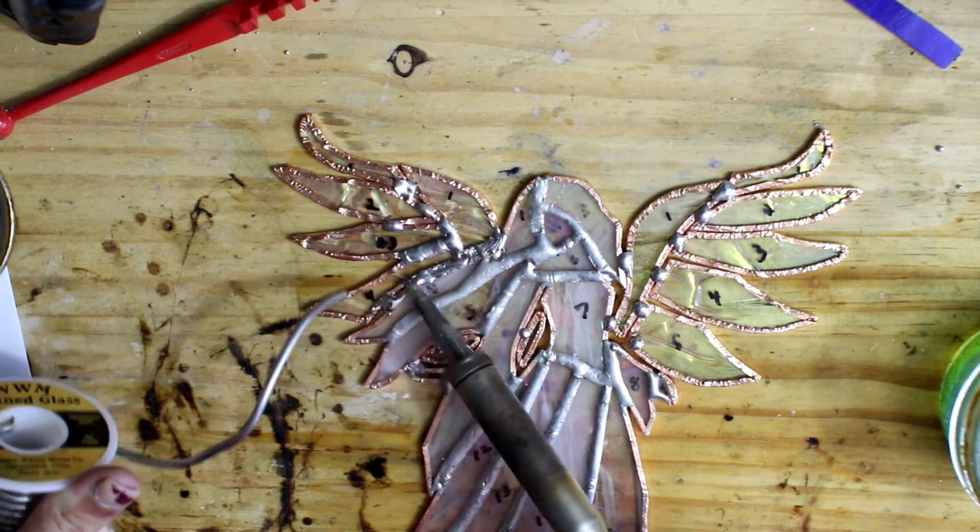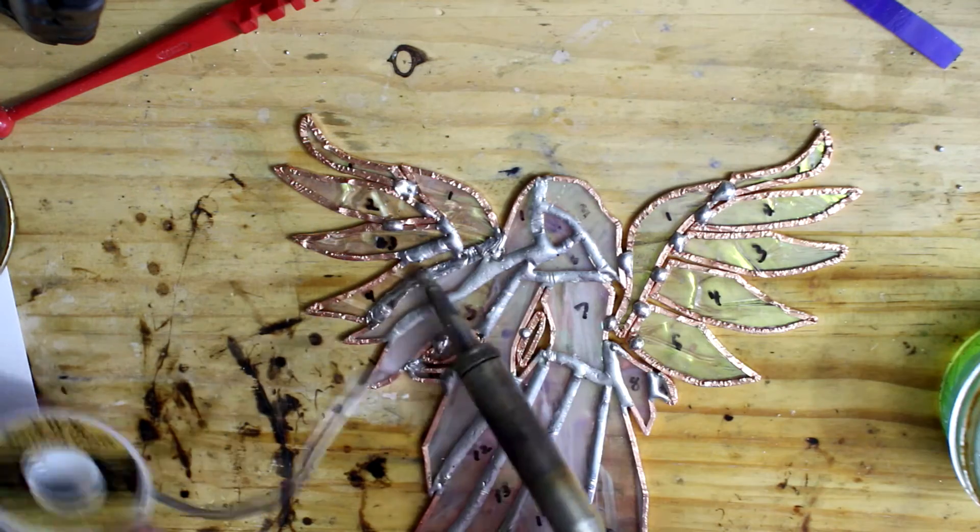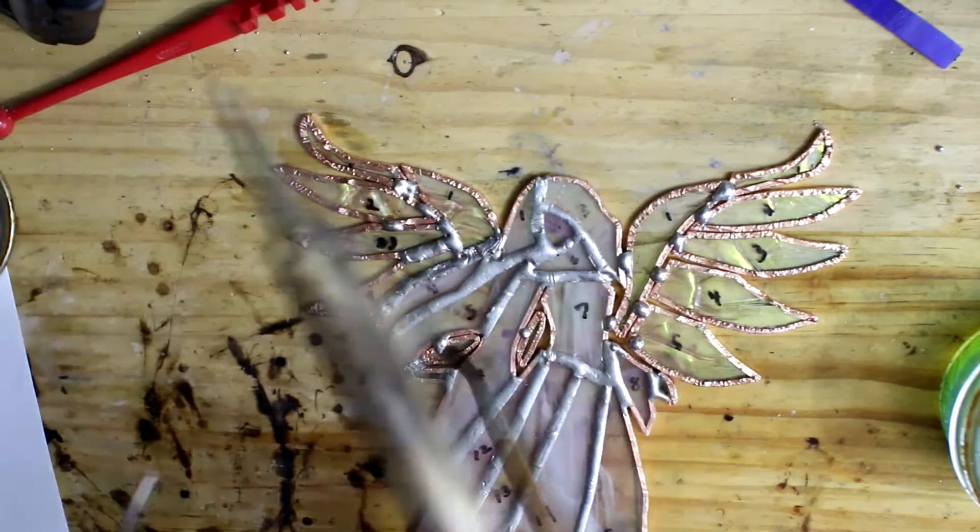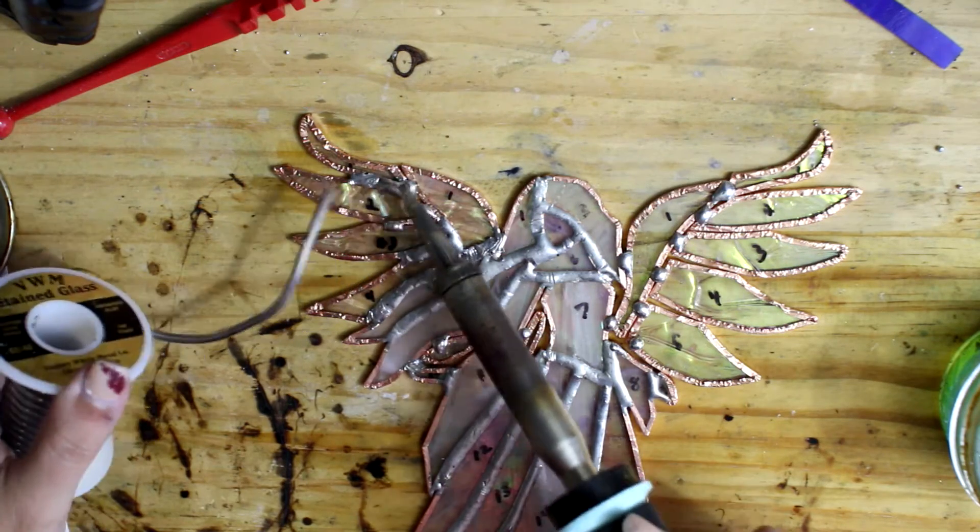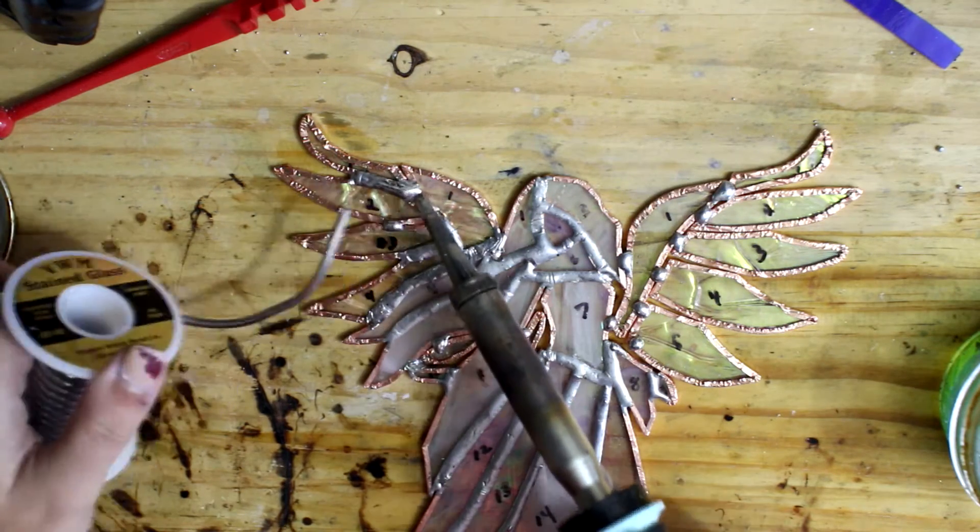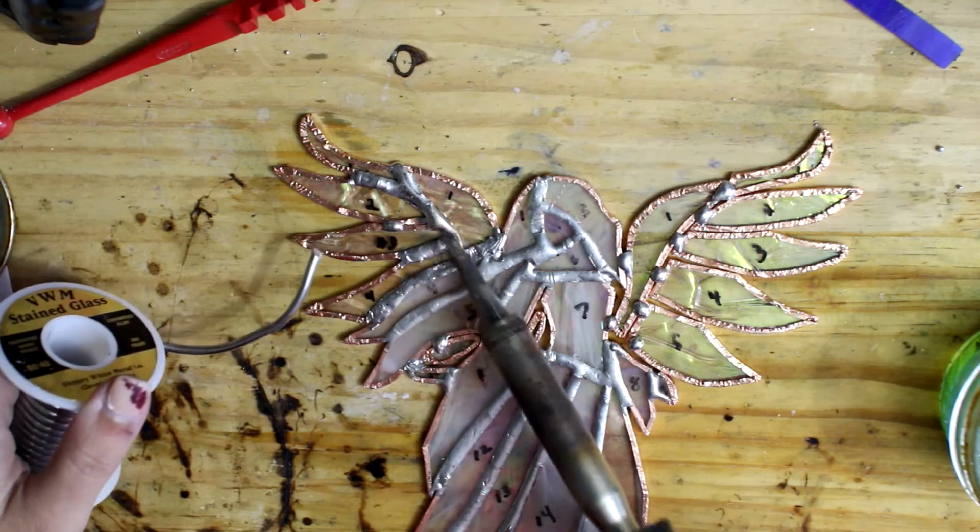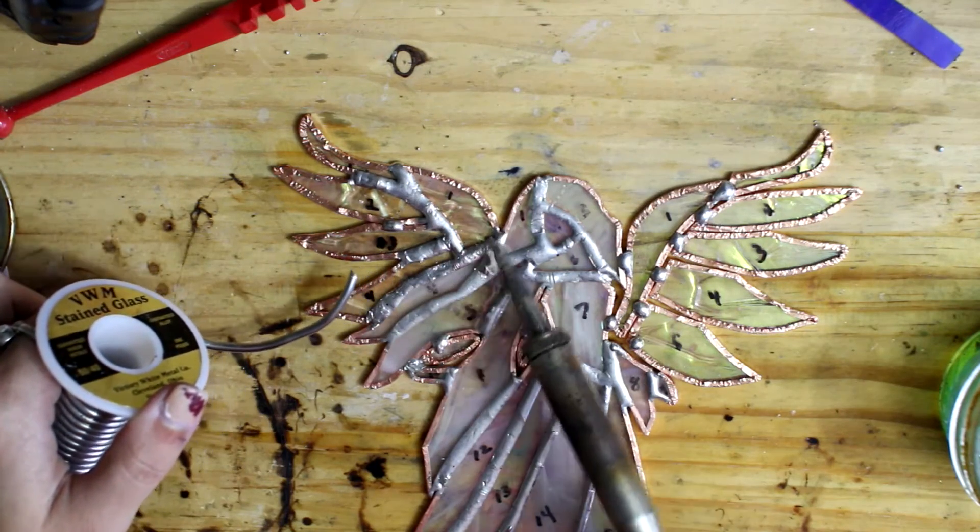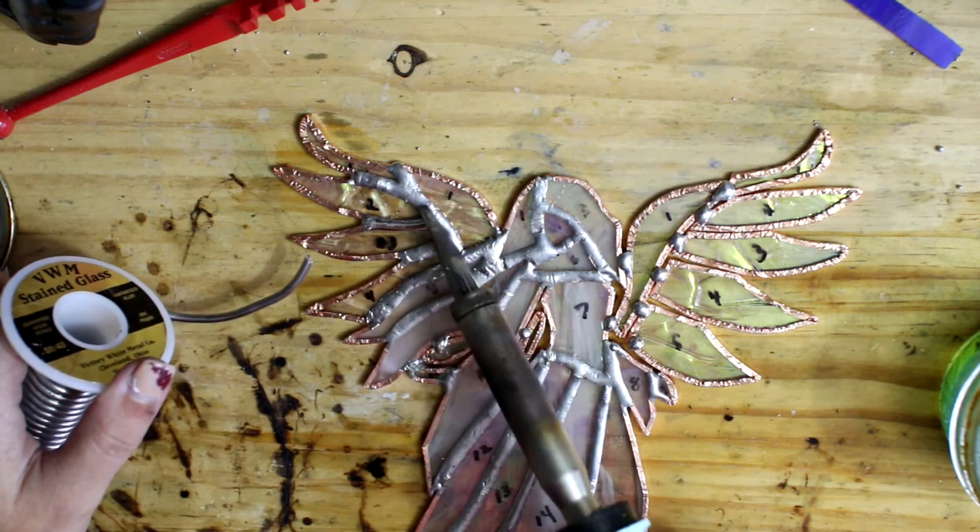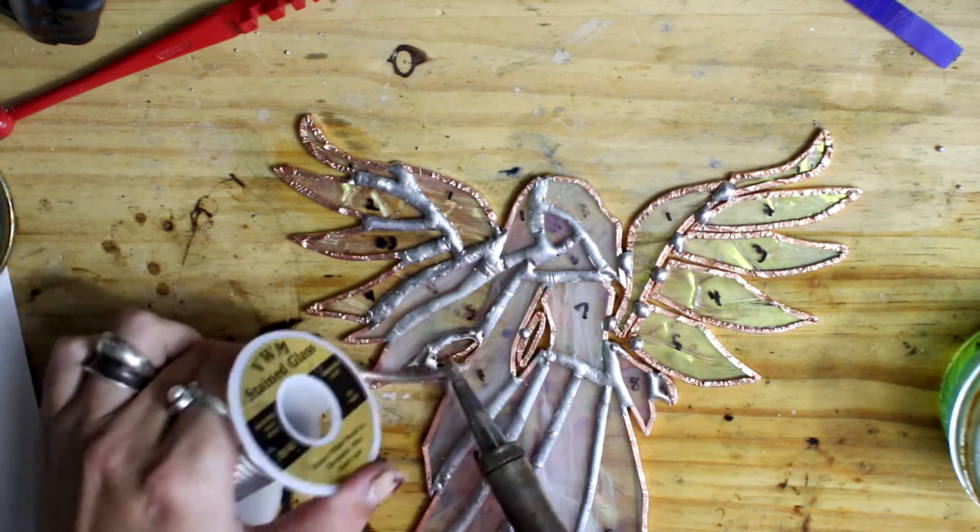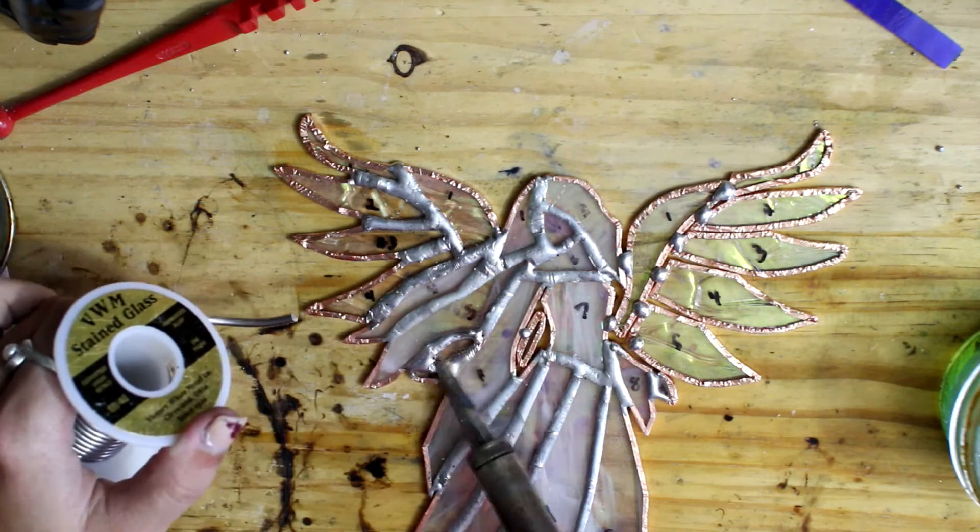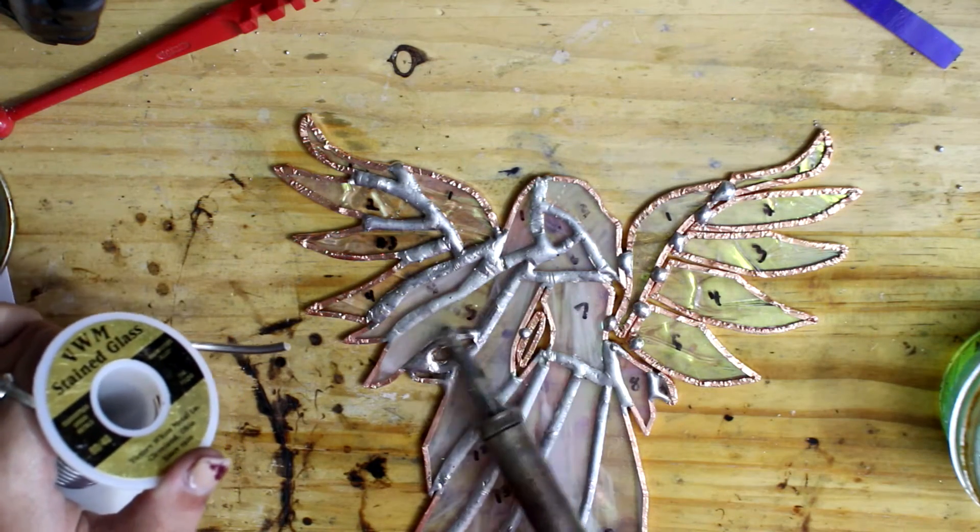If your solder doesn't stick, just all you have to do is reapply some flux, and if that doesn't work, just step away from it. Don't let it get the best of you because usually when you go back to it, it'll get covered. Sometimes it can be a little finicky, so just make sure you don't keep running over the same spot over and over again.